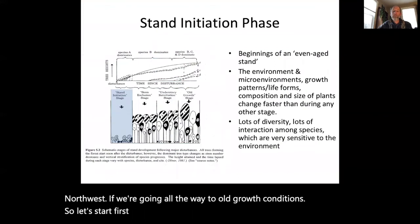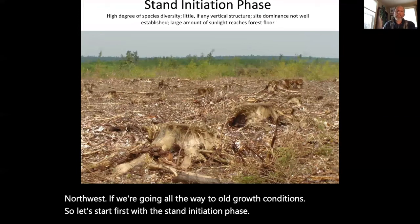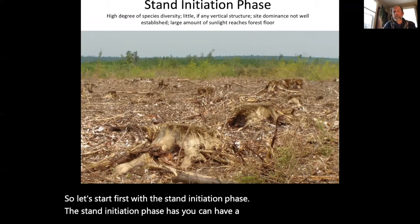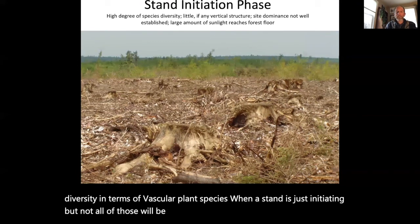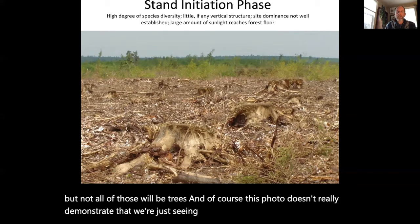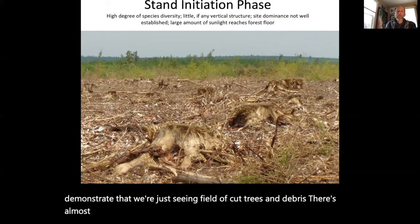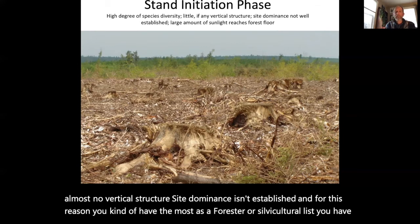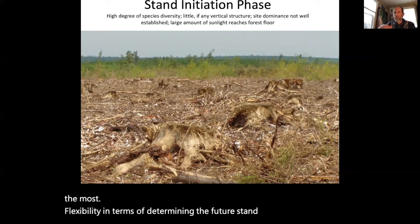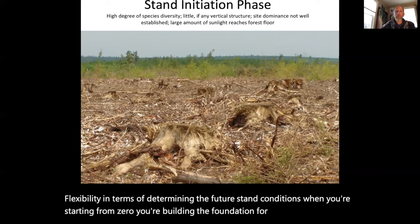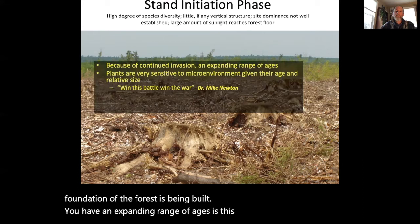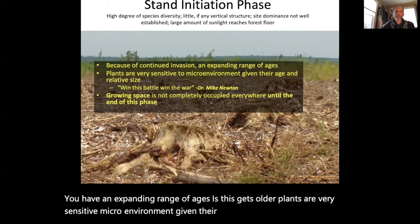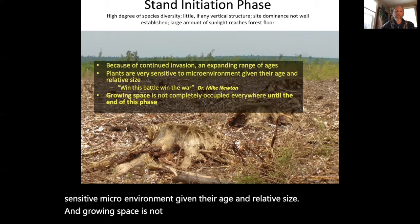Let's start with the stand initiation phase. You can have a high amount of species diversity in terms of vascular plant species when a stand is just initiating, but not all of those will be trees. There's almost no vertical structure; site dominance isn't established. For this reason, as a forester or silviculturalist, you have the most flexibility in determining the future stand conditions when starting from zero — you're building the foundation of the forest. Plants are very sensitive to microenvironment given their age and relative size, and growing space is not completely occupied everywhere until the end of this phase.